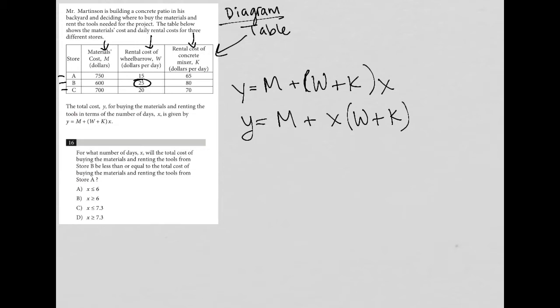So now what does the question actually say? Question number 16 says, for what number of days X, so this is what we're trying to solve for, will the cost of buying the materials and renting the tools from store B be less than or equal to the cost of buying the materials and renting the tools from store A? So we want this equation for store B to be less than or equal to that same equation for store A.